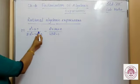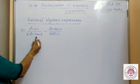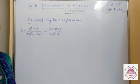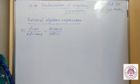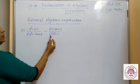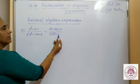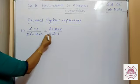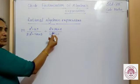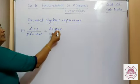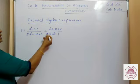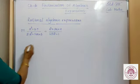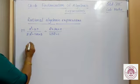Here, (a³ - 27) upon (5a² - 16a + 3) divided by (a² + 3a + 9) upon (25a² - 1). We have division here. First, we will take the reciprocal of the second expression and convert this division into multiplication, just like in rational numbers.